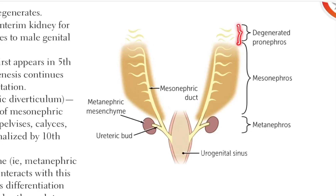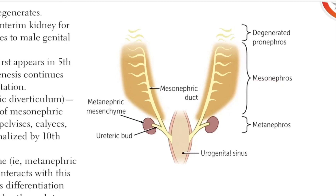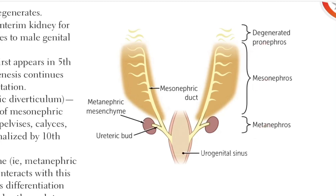These degenerated structures are called as the degenerated pronephros. This structure in the yellow is called as the mesonephros and these structures are called as the metanephros. So the kidney is derived from the pronephros, mesonephros and the metanephros.